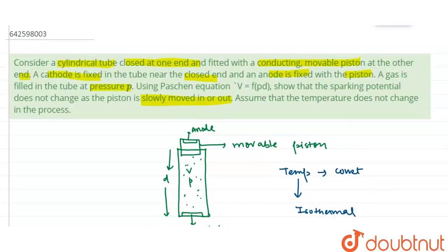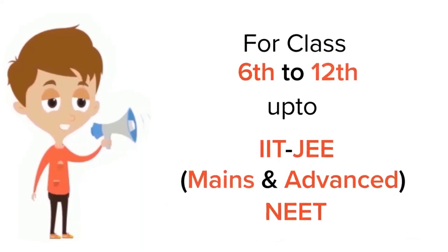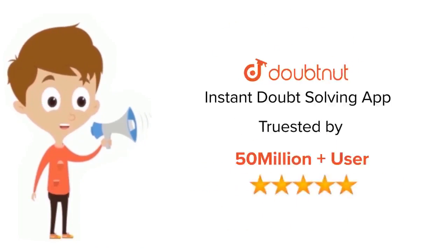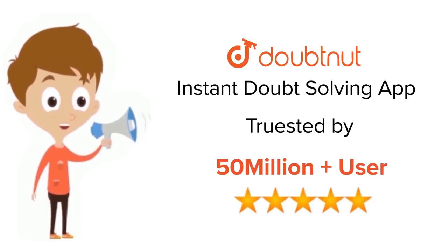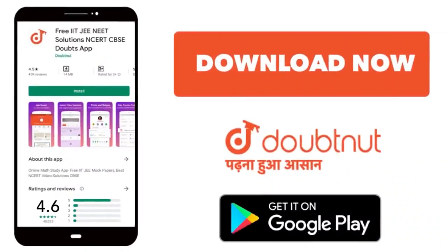Thank you. For class 6 to 12, IIT JEE and NEET level, trusted by more than 5 crore students — download the DoubtNut app today.